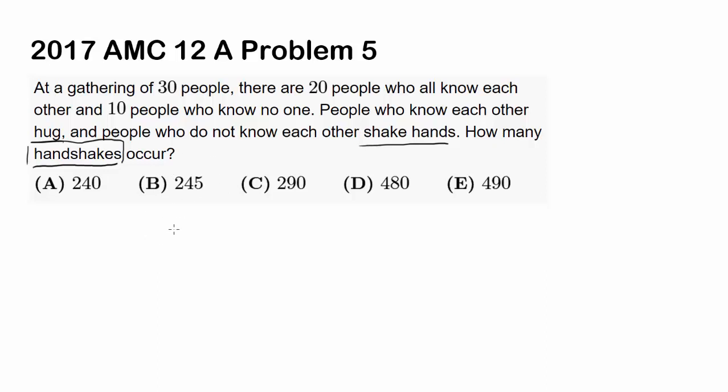The easier way of doing it is by looking at this from the perspective of the people who do not know anyone. The reason I'm doing this is because these people are going to have to handshake every single person in the room except themselves, except himself or herself. Because for 20 people who know each other, they are not going to shake hands.